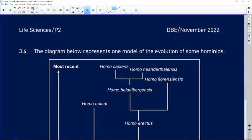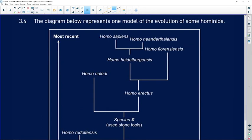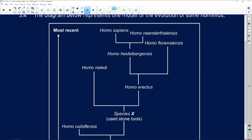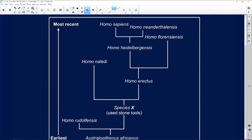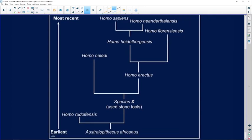We're looking now at question 3.4. The diagram below represents one model of the evolution of some hominids. So here's our diagram from earliest times to most recent times. So these would be the older and the more recent examples.